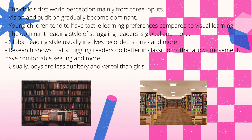The child's first world perceptions come mainly from three inputs: tactile, kinesthetic, and vestibular. Vision and audition gradually become dominant when these basic senses become integrated with higher level senses. Young children tend to have tactile reading preferences compared to visual learning. A global reading style usually involves recorded stories, and research shows that struggling readers do better in classrooms that allow movement, have comfortable seating, and enable students to work in different groupings. When students' environmental needs are fulfilled, they are most likely to associate reading with pleasure.